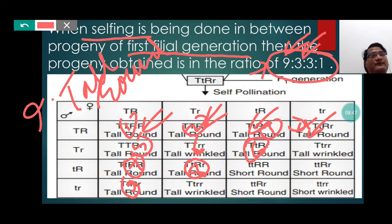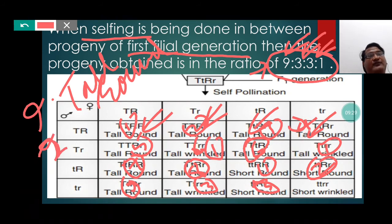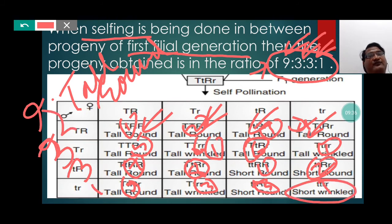The 3 represents the tall wrinkled, and you can count tall wrinkle 1, tall wrinkle 2, and tall wrinkle 3. The remaining 3 is the short round — short round 1, short round 2, and short round 3. Finally, the 1 represents short wrinkled, which is only one in number. So it becomes 9 is to 3 is to 3 is to 1.